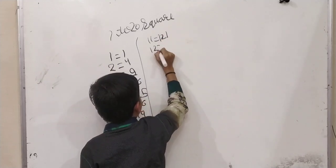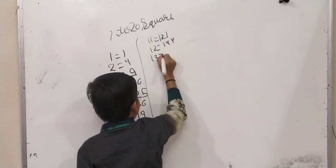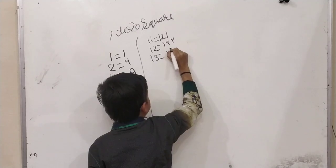Twelve squared, one forty-four. Thirteen squared, one sixty-nine. Fourteen squared, one ninety-six.